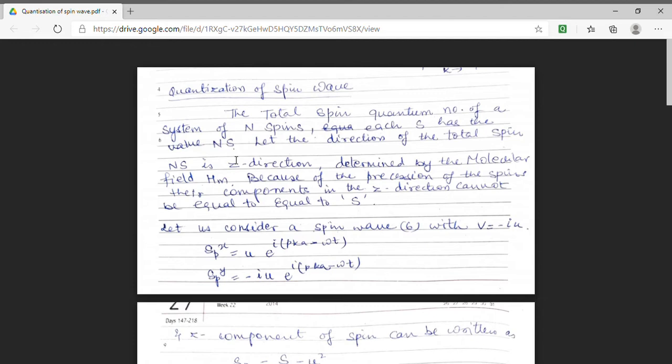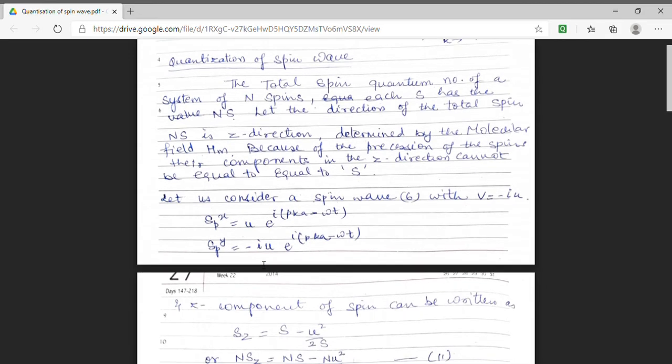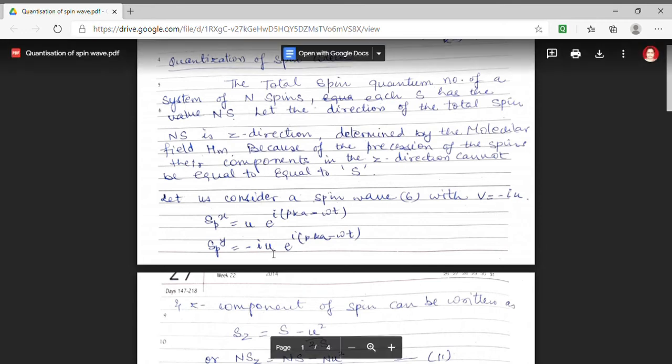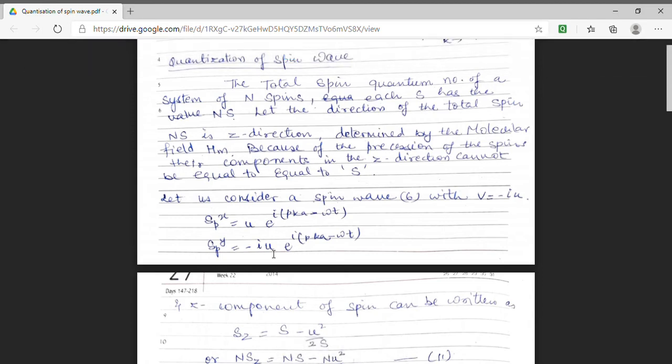So I am taking a site which is denoted by P and assuming that spin at X direction is U exponential iota pKa minus omega t. And the spin which is along Y direction to have an amplitude V which is equal to minus iota U. So the spin along Y direction will be minus iota U e raised to power iota pKa minus omega t.